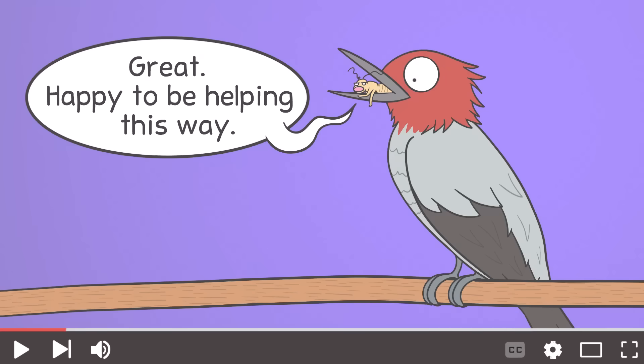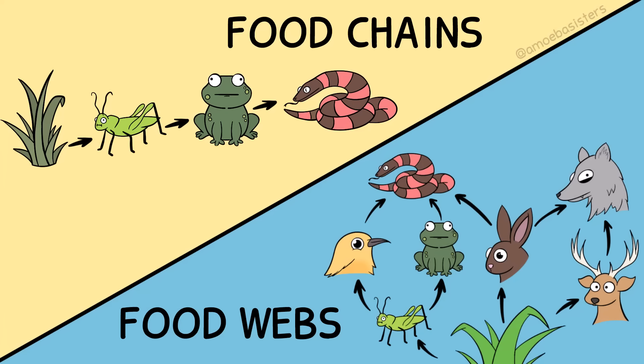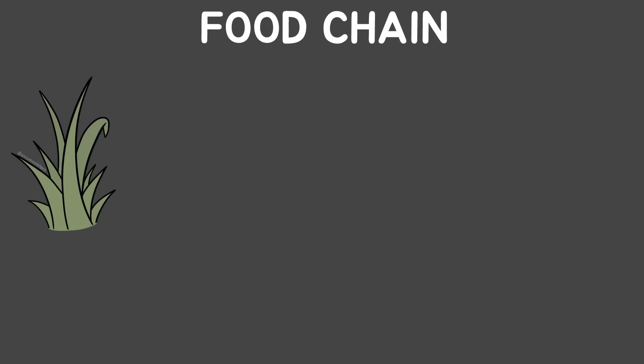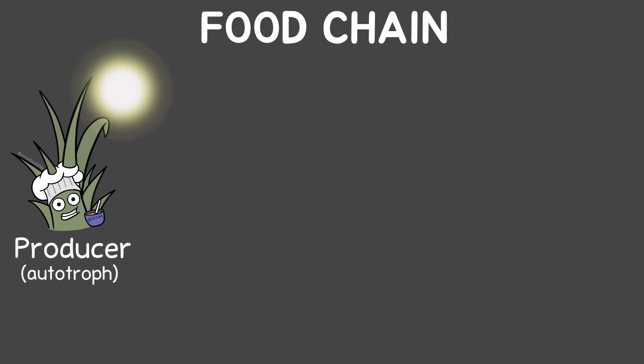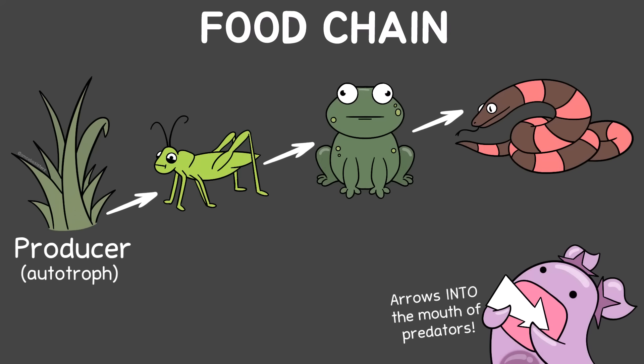We mentioned that termites are part of food chains in many ecosystems. Let's review food chains and food webs real quick. Food chains generally start with a producer. Producers are autotrophs — they are able to make their own food. Plants are common producers. Arrows in food webs point to the directional flow of energy, so they point to who is doing the eating.